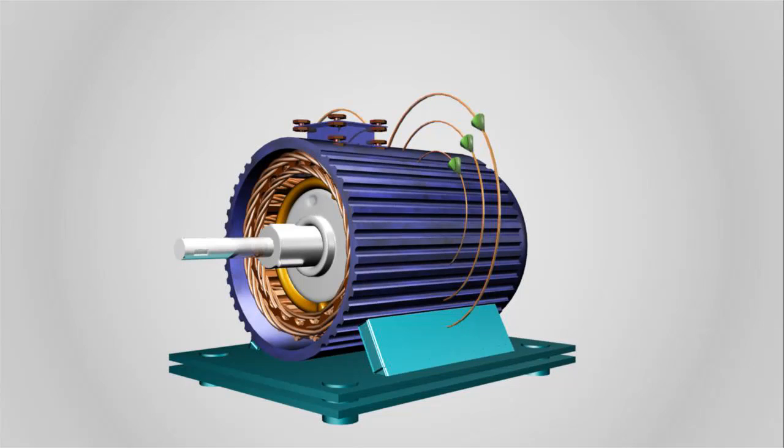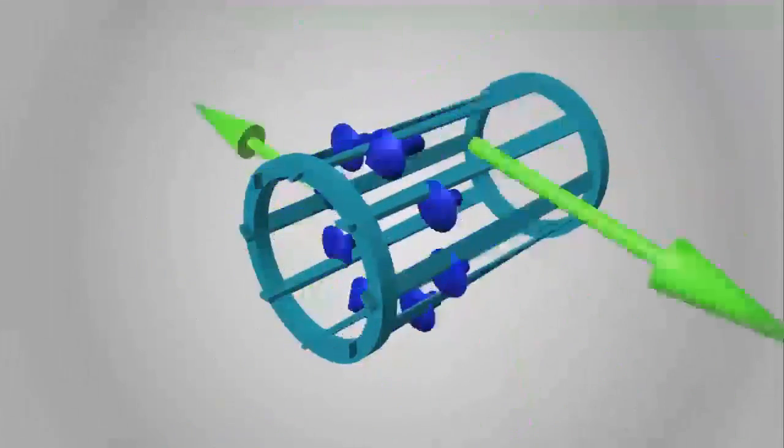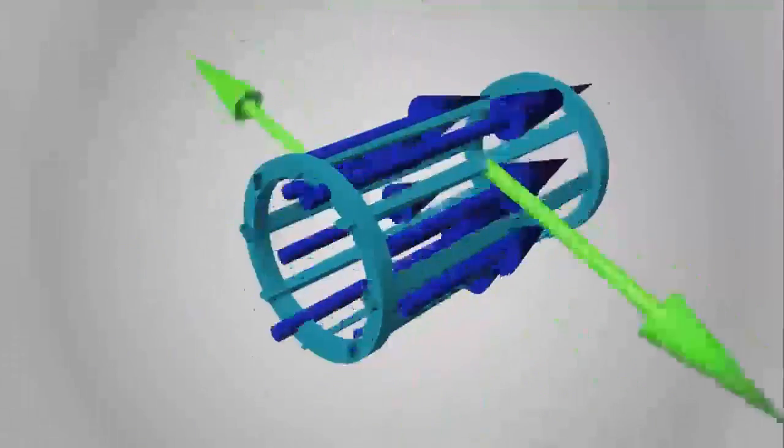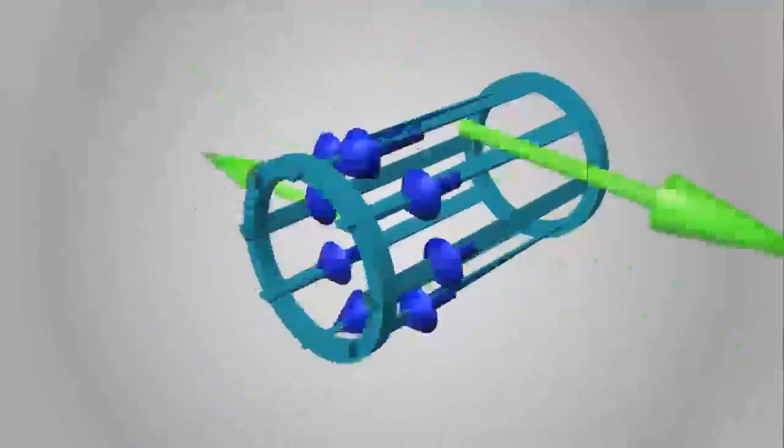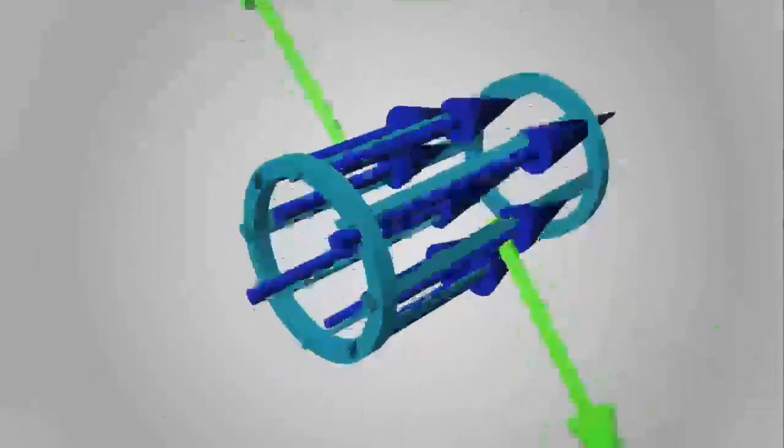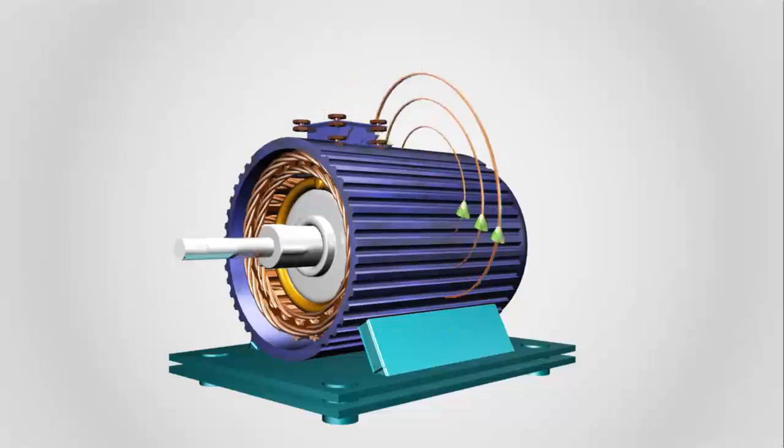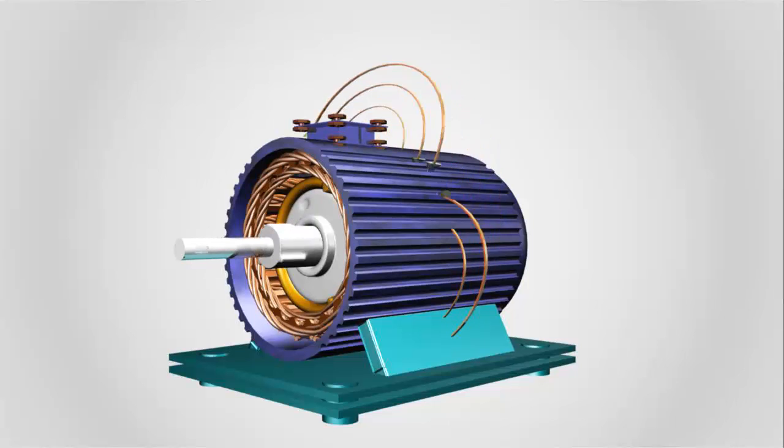This magnetic field induces an EMF in the rotor core. And the rotor experiences a varying force as shown in the figure. Here, blue arrow indicates the direction of forces and the green arrow indicates the resultant torque due to the force. And due to this torque, the rotor starts rotating.